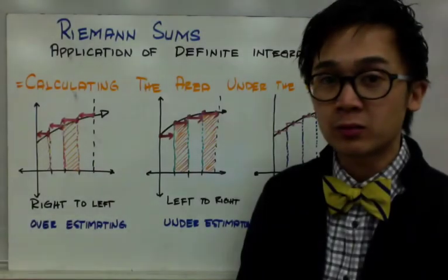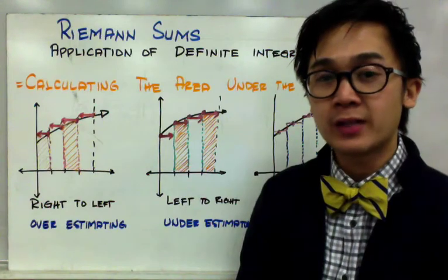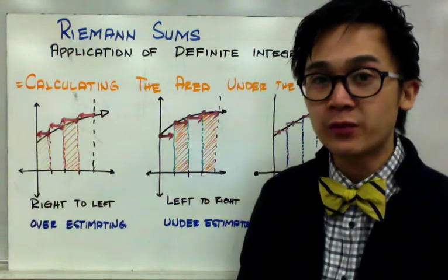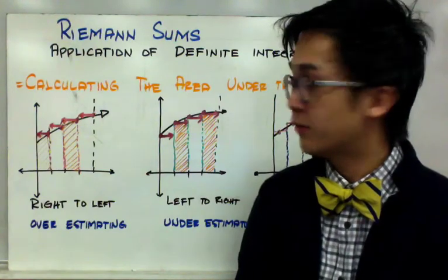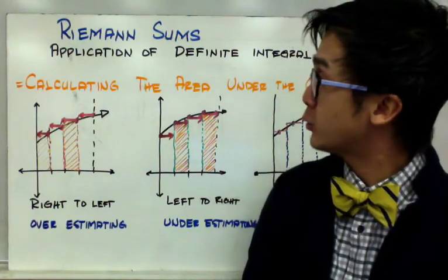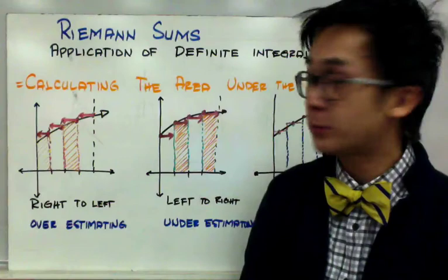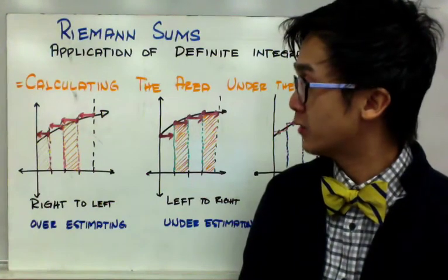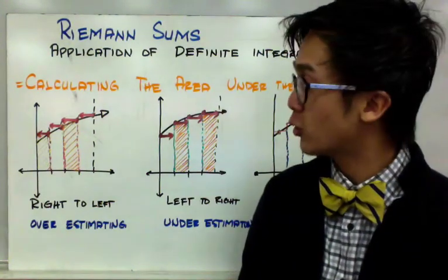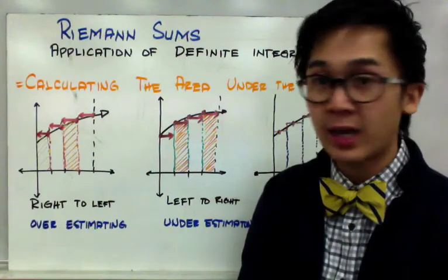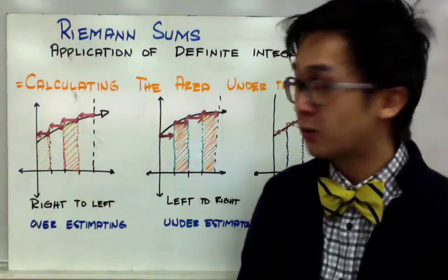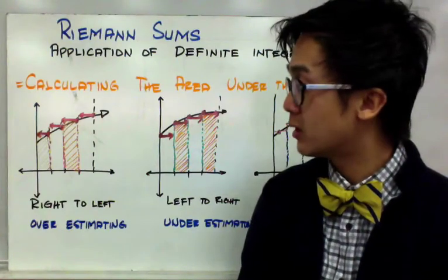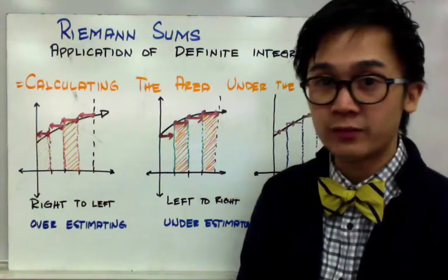One of the many applications of the integral is finding the area under the curve. This time we're going to use a different approach — Riemann sums — as a method of computing the area under the curve, which gives us an estimated area using geometric figures. Today we're going to use rectangles and trapezoids to approximate the area of a given curve.